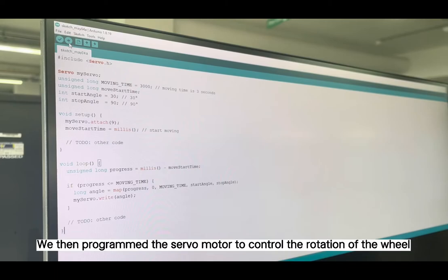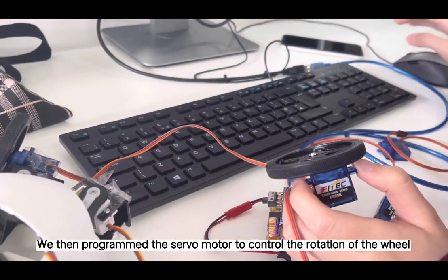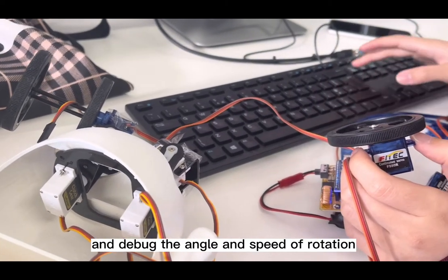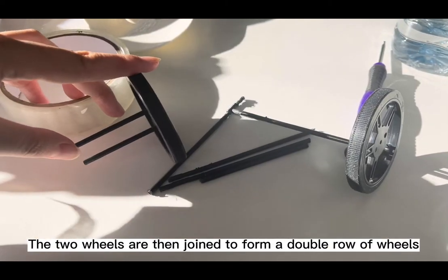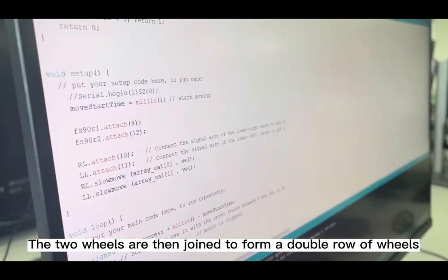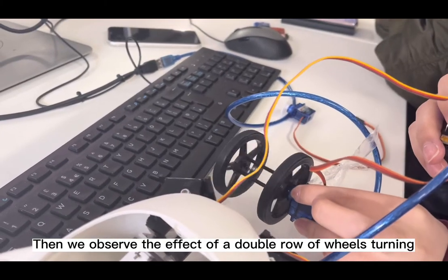We then programmed the motors to control the rotation of the wheels and debug the angle and speed of rotation. The two wheels are then joined to form a double row of wheels. Then we observe the effect of the double row of wheels turning.